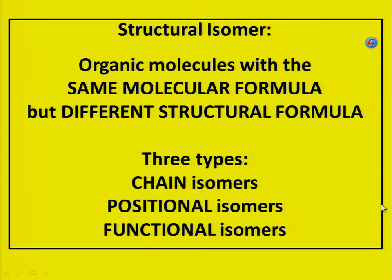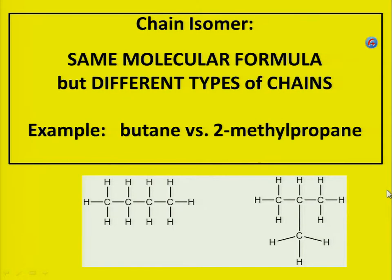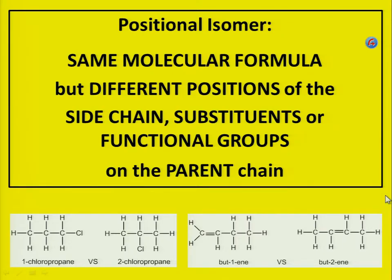Chain isomers: same molecular formula but different types of chains — here the chain is linear, here you have a branched chain. Positional isomers: same molecular formula but the functional group or bond is in a different position — here you have chlorine at the end of the chain, here the chlorine is in the middle of the chain. Here the double bond is at the end of the chain, here the double bond is in the middle of the chain.